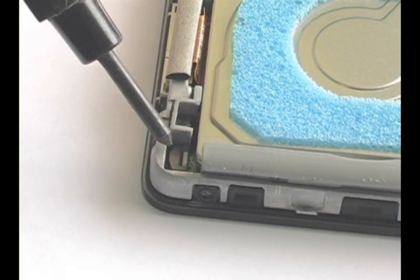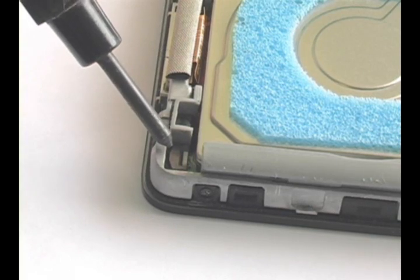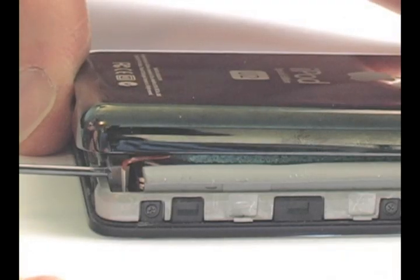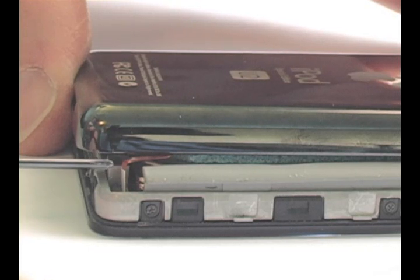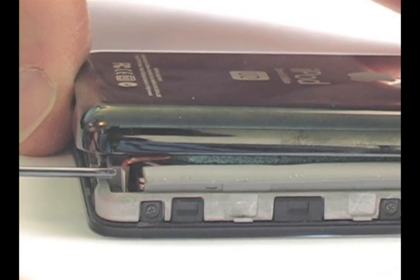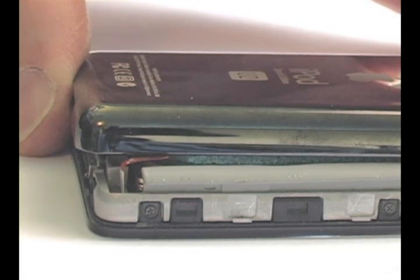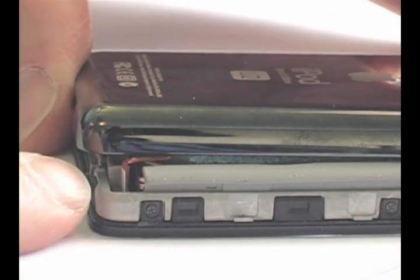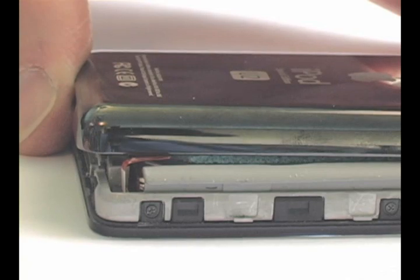The battery connector is located below the hard drive. The white tab on the battery cable should be facing the bottom of the iPod. Carefully press it into the connector. You should feel it snug into place. Do not press too hard as it is easy to break this connector.